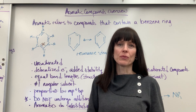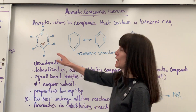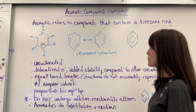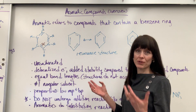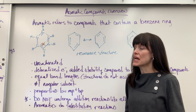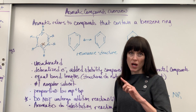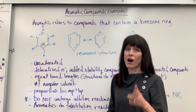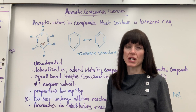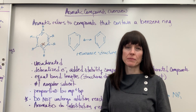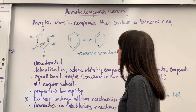Now we talk about aromatic compounds simply being a benzene ring. Let's look at a couple of ways that we can draw this benzene ring. Benzene has six carbons on it with alternating double bonds — it's a resonance structure.